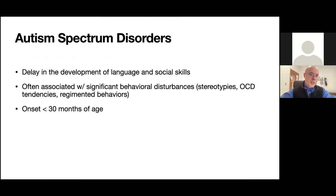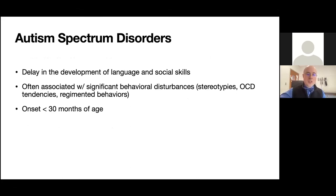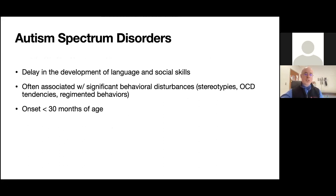Autism is a whole lecture in itself, but when we say a child has an ASD-related disorder, they have a delay in their language and social development, typically with onset less than two and a half to three years of age. There can be very significant behavioral disturbances — they're very regimented, have OC tendencies, and frequent stereotypies, which commonly occur with ASD.